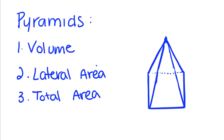Today we're going to switch from talking about right circular cylinders to talking about a pyramid — specifically the volume, lateral area, and total area of a pyramid.